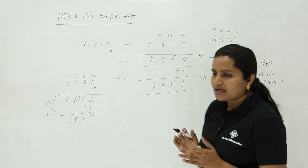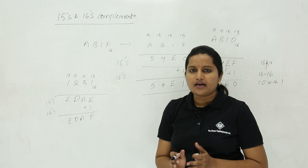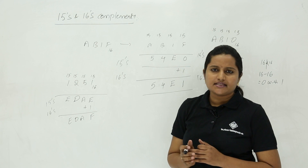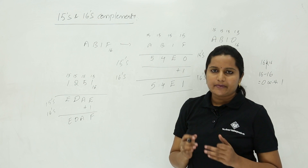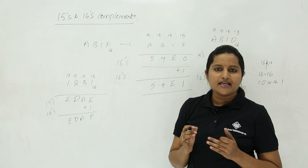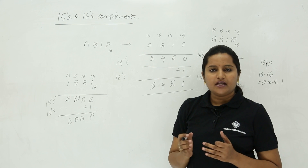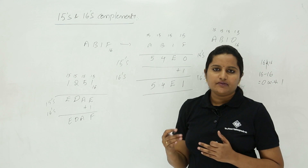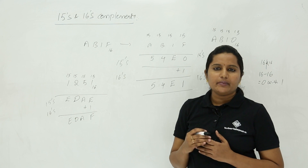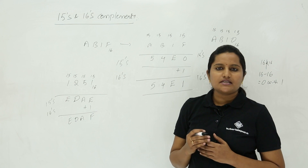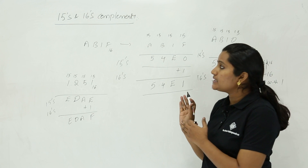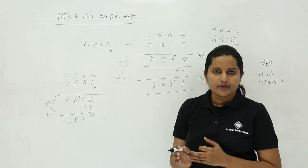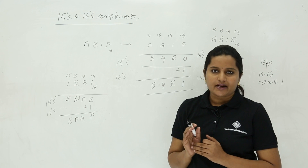In the same way we can find any 15's and 16's complement for any hexadecimal number. Just by subtracting each and every digit from 15 you get the 15's complement. Adding 1 to the 15's complement gives you the 16's complement. These 15's and 16's complements are very important while doing hexadecimal subtraction.